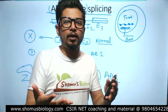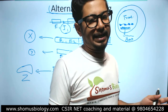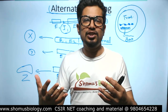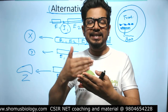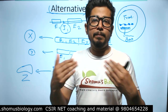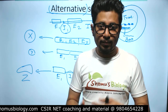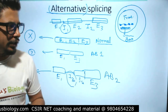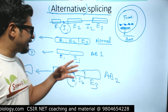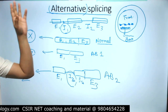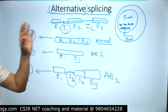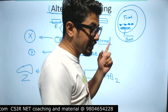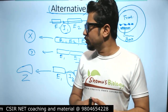Essentially, alternative splicing increases the expression potential of an mRNA. From a single mRNA, we can produce many varieties of proteins that may have different functions in the cell. That is the beauty of alternative splicing — it's important to keep that in mind.